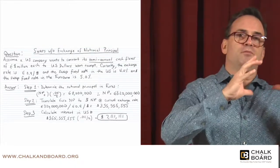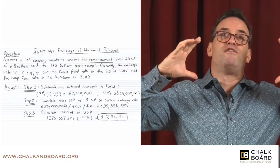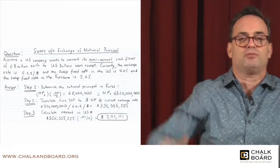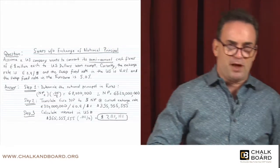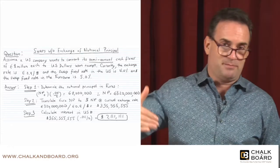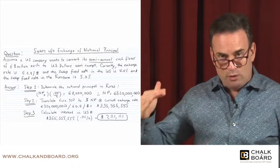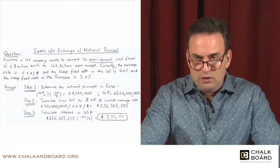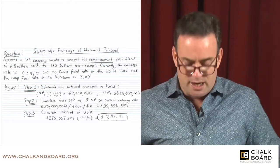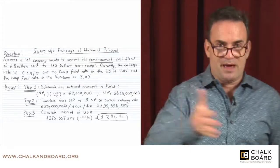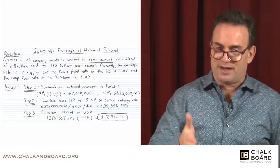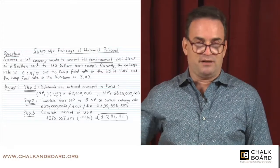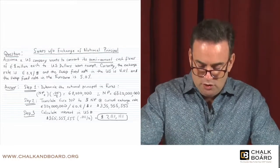What would have to be the notional principal — the value of the bond in euros — such that when multiplied by 5%, which is an annual rate, and de-annualized by dividing by two, it equals 8 million euros on a semi-annual basis? If we solve for the notional principal, we get 320 million euros. 320 million euros times 5% divided by two gives you 8 million euros.